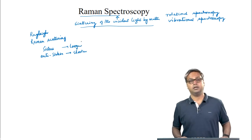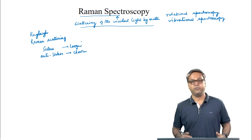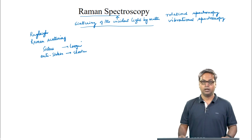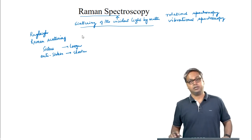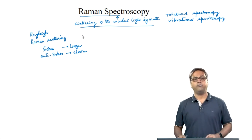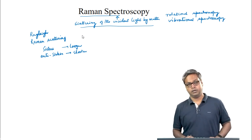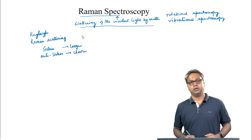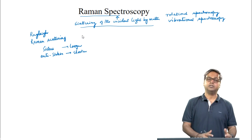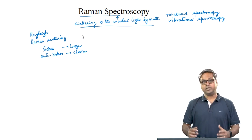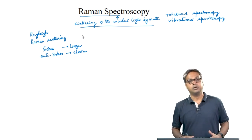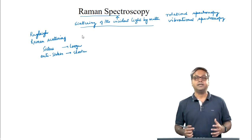In the last lecture, we looked into the Raman effect using a classical model. In today's lecture, we will try to understand the quantum theory of the Raman effect. Here, we will think of light as made of photons instead of light as a wave. Because light is made of photons, they have quantized energies.